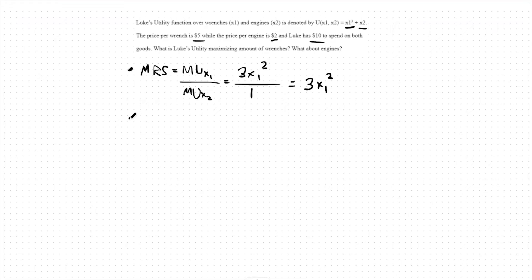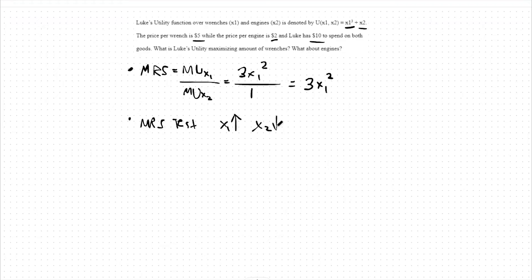Before we continue, we have to do something called the MRS test. The MRS test has us see what happens to our marginal rate of substitution as the amount of good one we purchase increases and the amount of good two we purchase decreases. Depending on the answer to these two questions, we will see an increasing marginal rate of substitution, a decreasing marginal rate of substitution, or a constant rate of substitution.